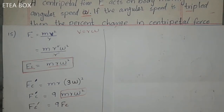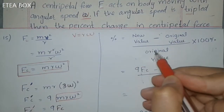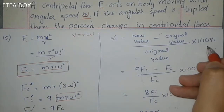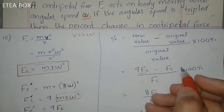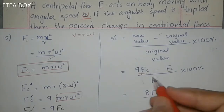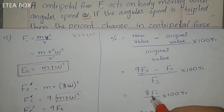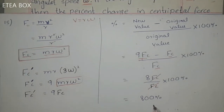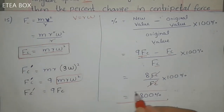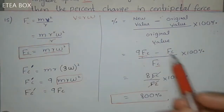Now let's find the percent change. The formula is: percent change = (new value − original value) / original value × 100%. New value is 9Fc, original is Fc. So (9Fc − Fc) / Fc × 100% = 8Fc / Fc × 100% = 800%. The percent change is 800%.